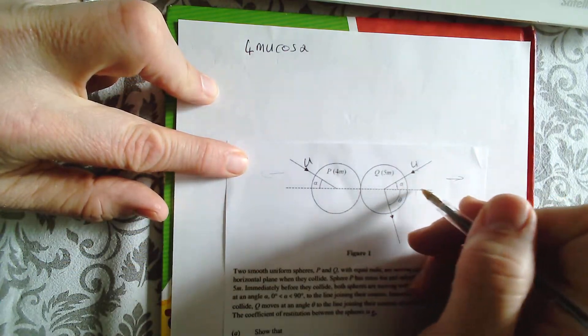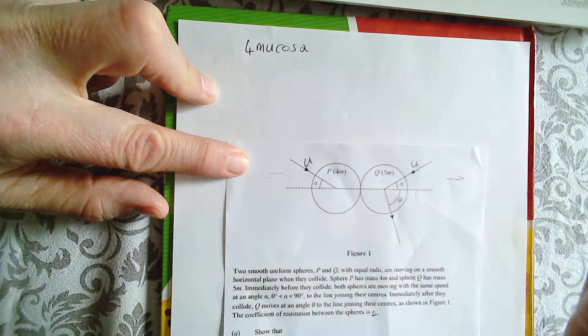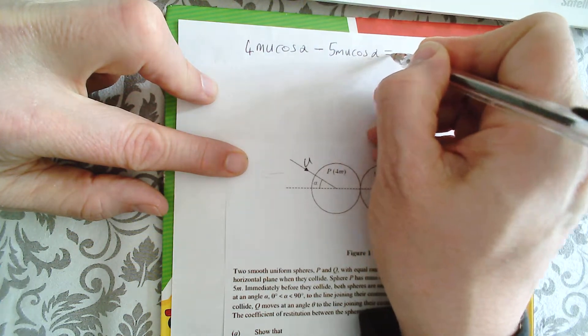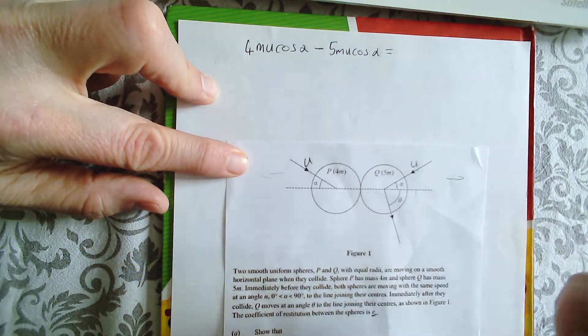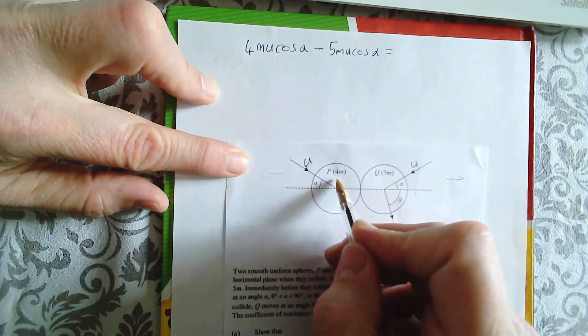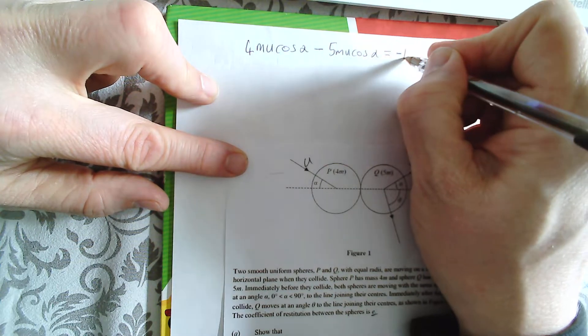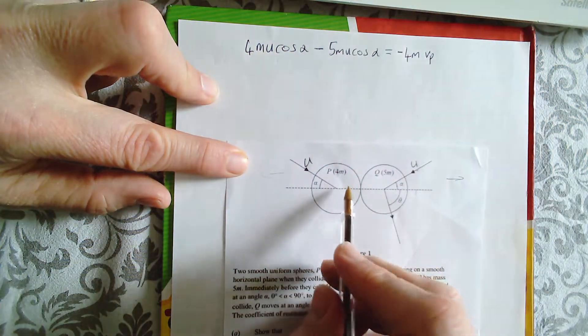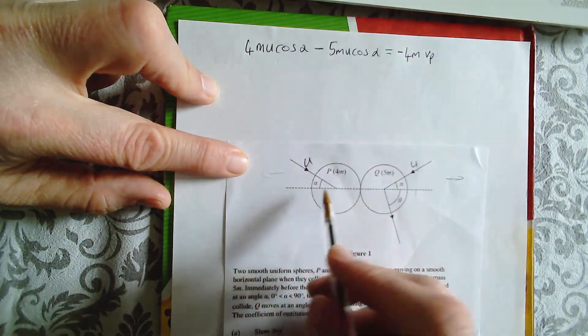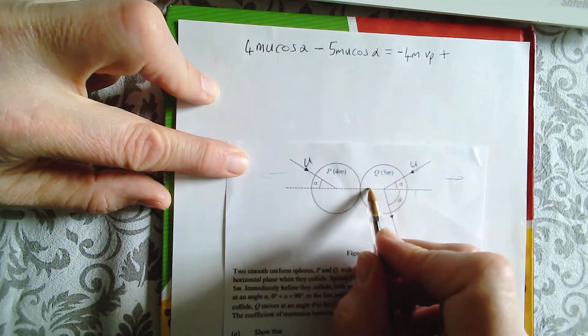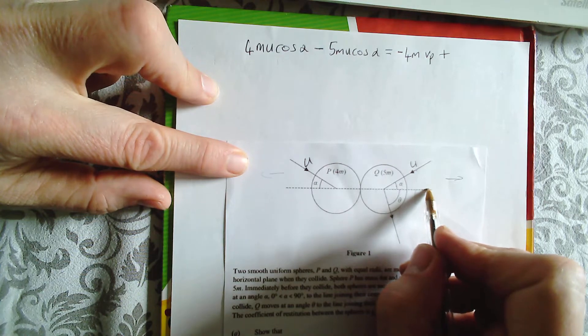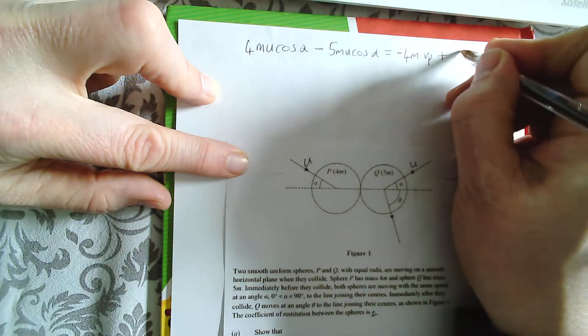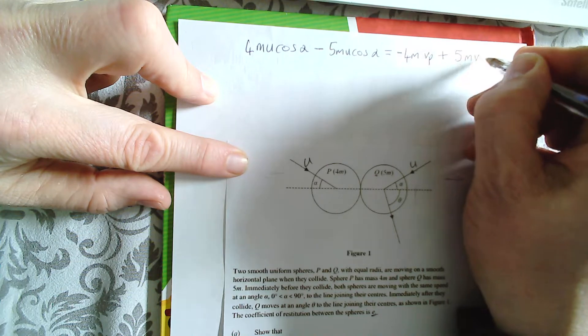And this has got negative momentum looking at direction because it's going the other way, minus 5m U cos alpha. And that's equal to the momentum after. And we're going to say this is going to be in the opposite direction afterwards. So that's negative 4m, and we'll call that Vp. We'll call the velocity along the line of centres afterwards for this Vp. And likewise, we'll call the velocity for Q along the line of centres afterwards Vq. Now this is going to go that way in terms of the line of centres. So we're going to call that 5m Vq.